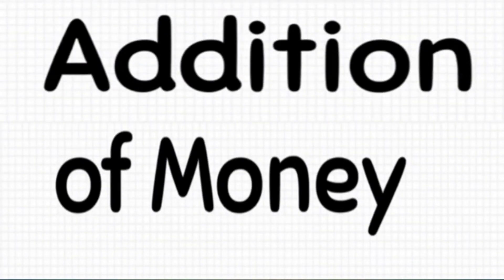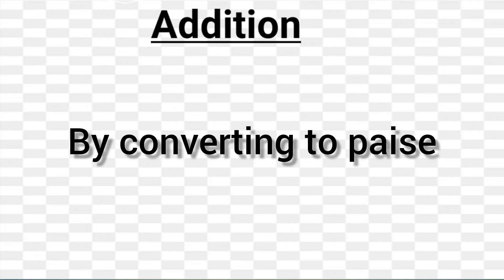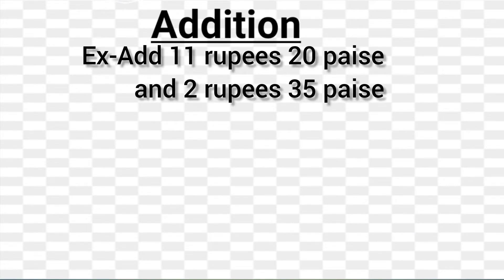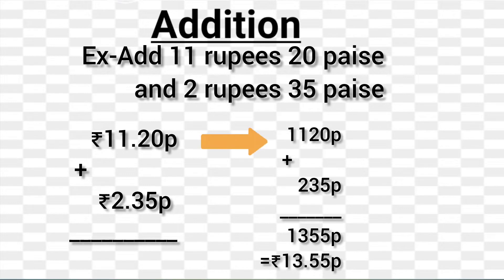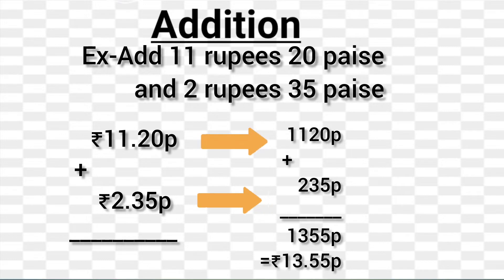Addition of money is the same as adding numbers, except that we place a dot to differentiate rupees and paise. जैसे numbers को add करते हैं वैसे ही money को भी हम add करेंगे, पर rupees और paise को एक dot के ज़रिये अलग दिखाना है। Addition of money can be done by converting into paise. For example: add 11 rupees 20 paise and 2 rupees 35 paise. 11 rupees 20 paise को paise में convert करने से 1120 paise होगा। 2 rupees 35 paise को paise में convert करने से 235 paise होगा। दोनों को add करने से 1355 paise होगा, equal to 13 rupees and 55 paise.